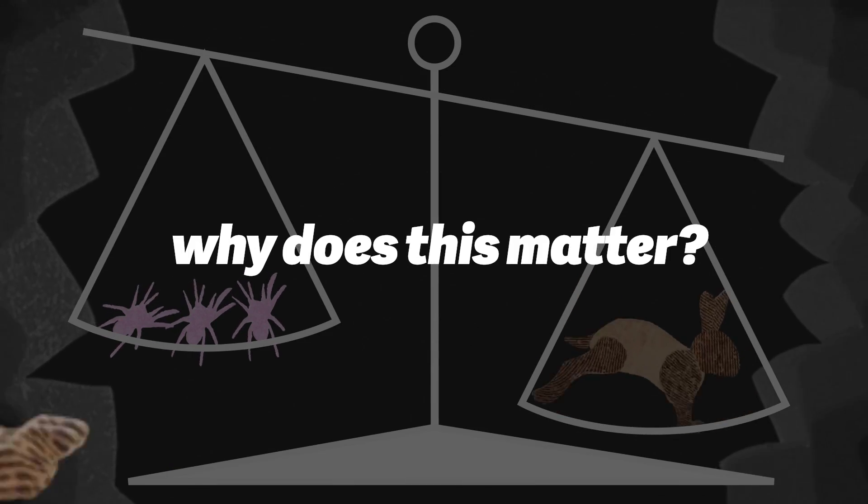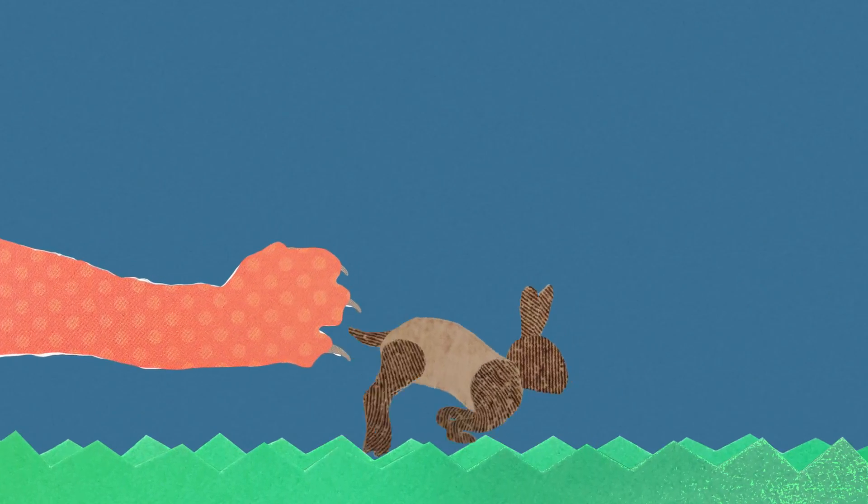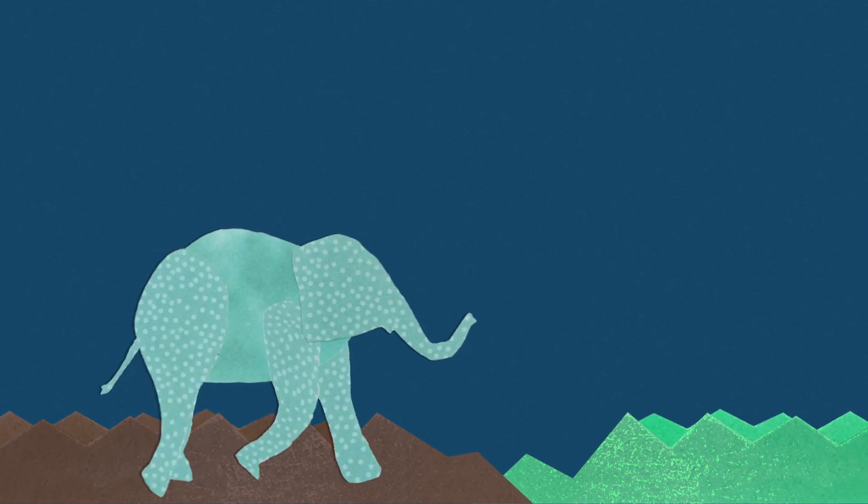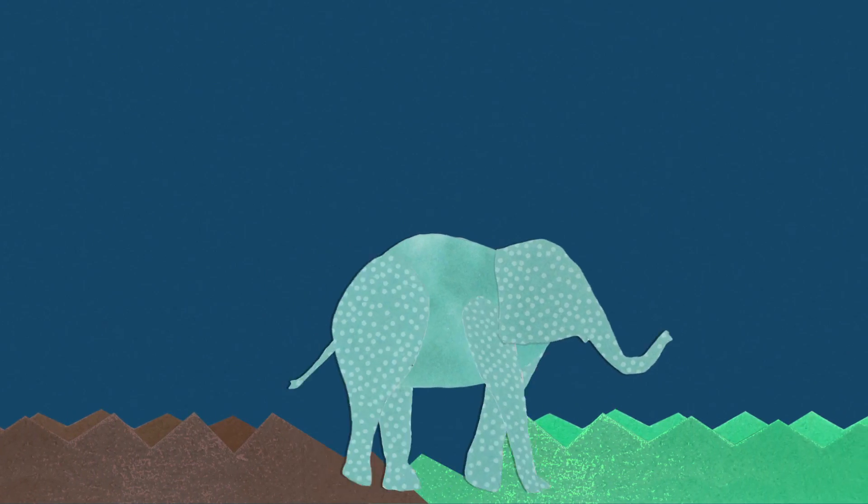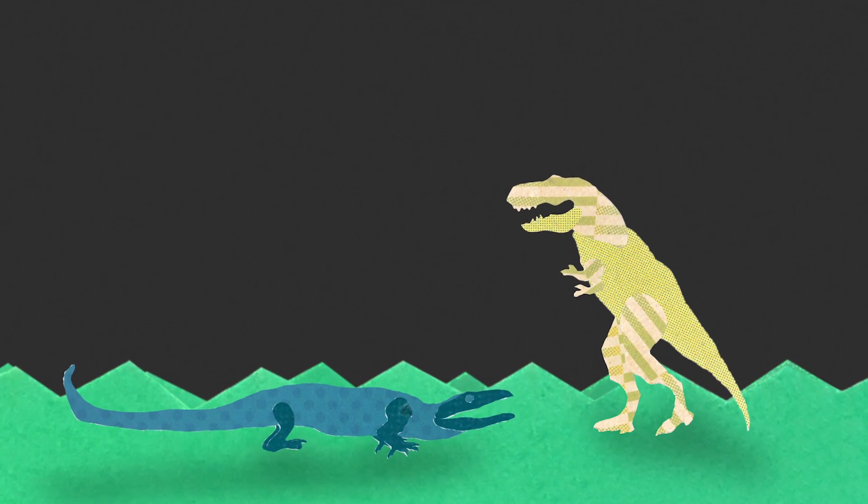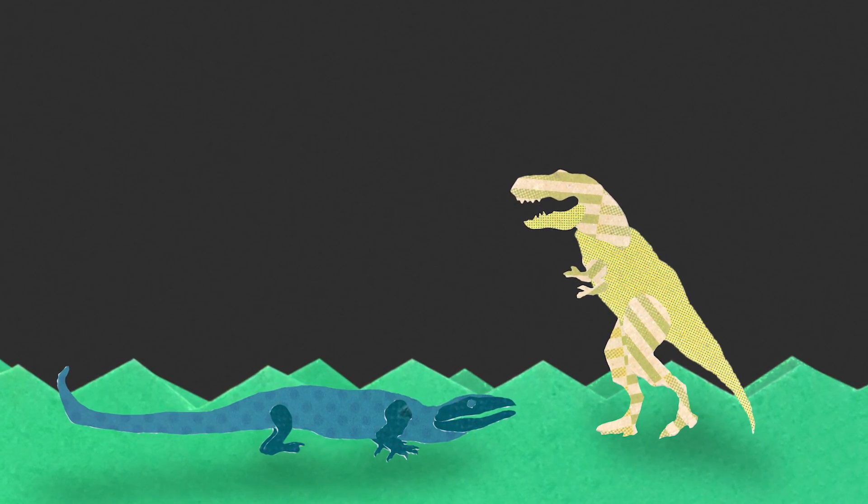So, why does this matter? Speed is key to how predators catch their prey, and how species move and relocate. So, by applying this model to little-known or extinct animals, we can learn a lot about them just by knowing their weight.